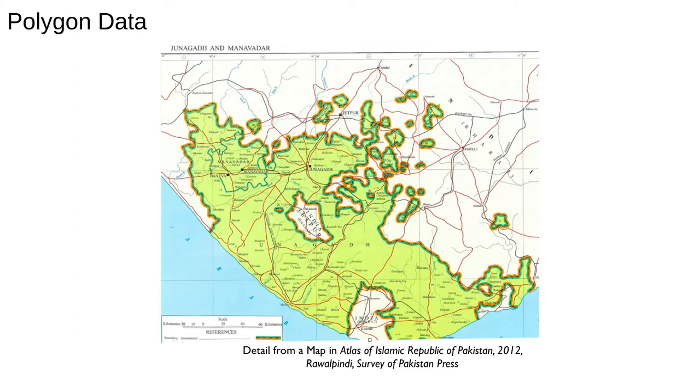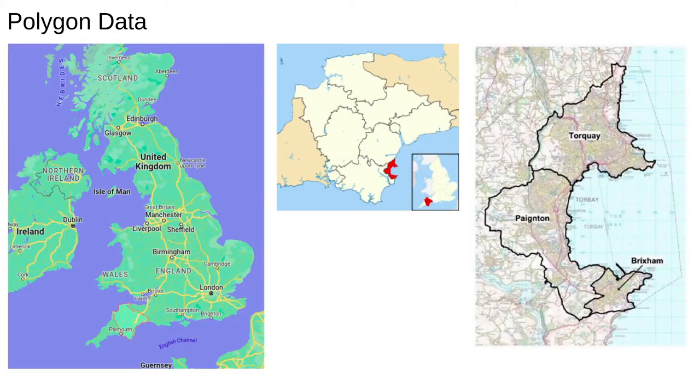Analyzing spatial data usually involves analyzing polygons. Since real places typically have very irregular boundaries, we have to get used to working with irregular polygons. The image here shows many examples of Indian enclaves in Pakistan and Pakistani enclaves in India. This is not unusual.